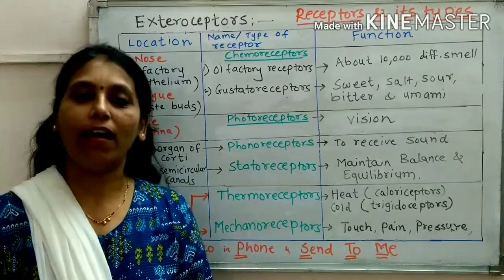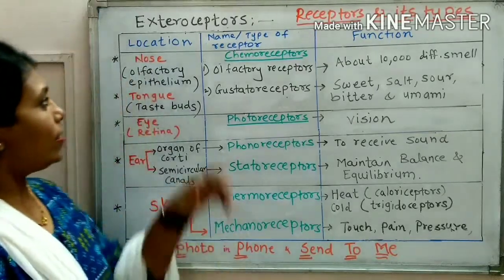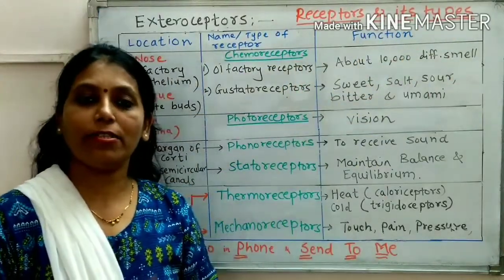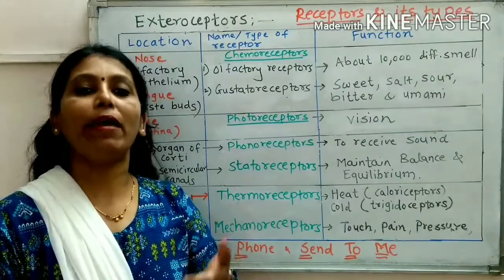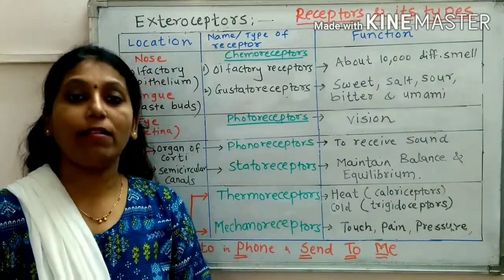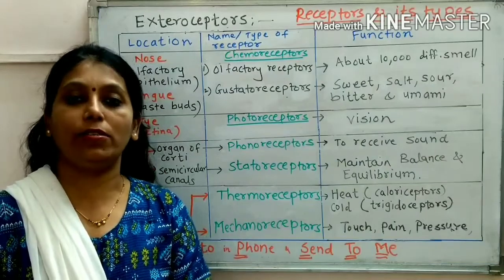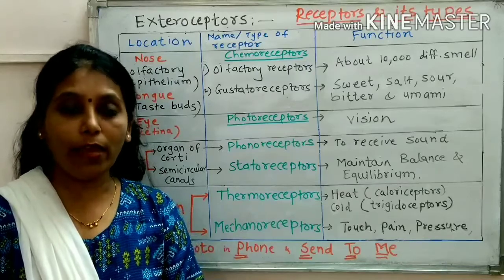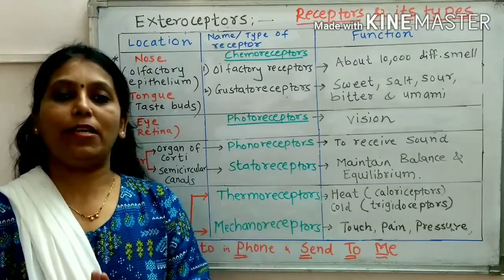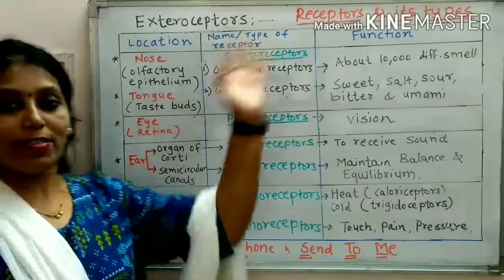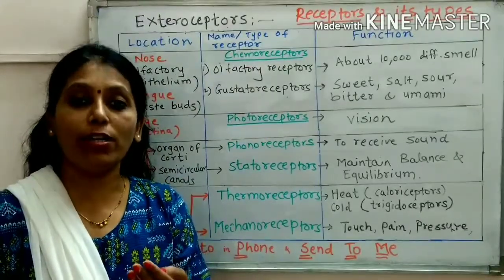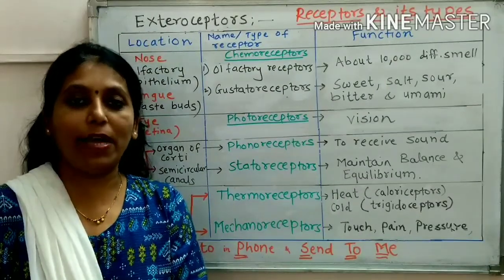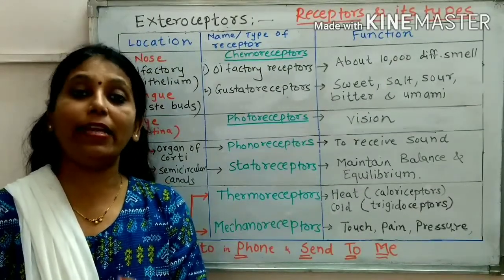Hello everyone. Our today's topic is receptors and its types. First, let us see what do you mean by receptors. Receptors are the specialized structures which are present in the human body. Now there are two types of receptors: extero-receptors, which receive the stimulus from outside, and intero-receptors, which are receptors present inside the body.